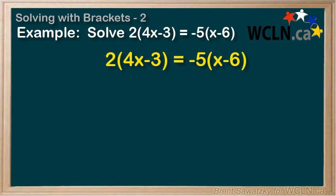In this case, we have distribution to do on both sides of the equal sign. On the left, 2 times 4x equals 8x, and 2 times negative 3 equals negative 6. On the right, negative 5 times x equals negative 5x, and negative 5 times negative 6, a negative times a negative is a positive, so plus 30.